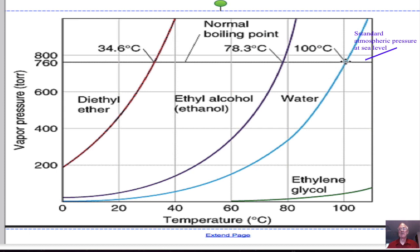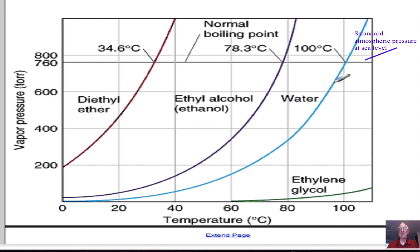One thing we can get from this graph is that if the atmospheric pressure is significantly different from 760 mmHg — for example, if you're camping at a high altitude where the air is thinner — the pressure may drop to 740 or 730 mmHg or even less. You can see that the water's vapor pressure will equal that lower atmospheric pressure at a lower temperature, so the boiling temperature of water is lower at high altitudes than it is at sea level.